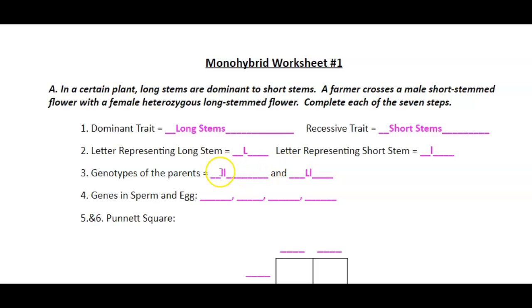Now remember, each of the dad's genes will get split up into separate sperm. So we're going to have a little L in one of the sperm, a little L in the other. And then mom's are going to get split up into eggs. So big L in one of the eggs, little L in the other.